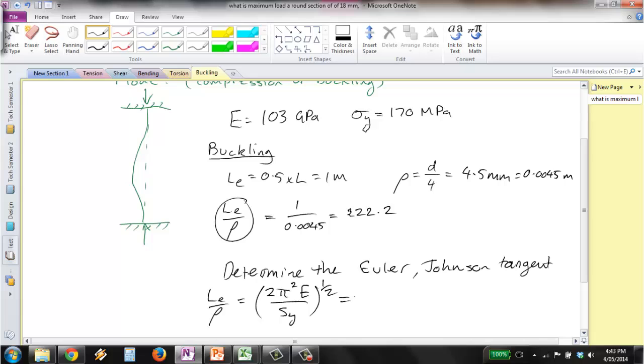This equals 2π² times E over σy to the power of one half, which is 2π² times 103 times 10⁹ divided by 170 times 10⁶ to the power of one half, which equals 109.36.